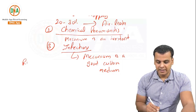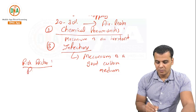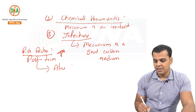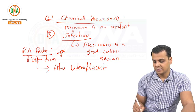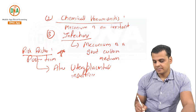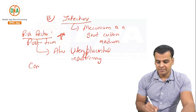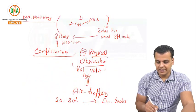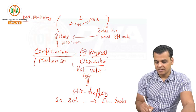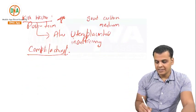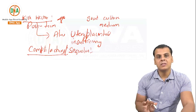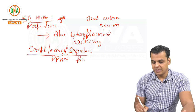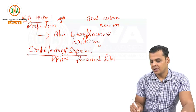Meconium also gives rise to infections as it is a very good culture medium. Post-term babies are most prone, one important reason being associated utero-placental insufficiency. The most dreadful complication or sequela of meconium aspiration syndrome is PPHN — Persistent Pulmonary Hypertension.